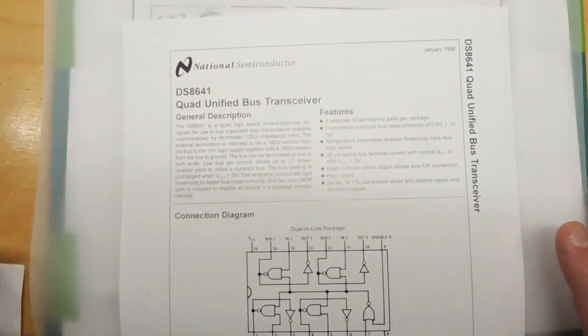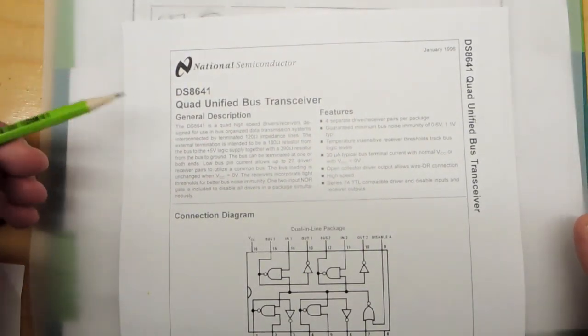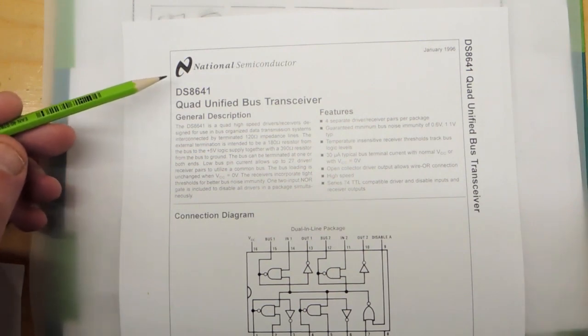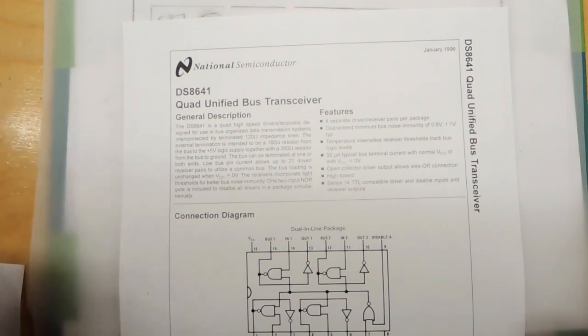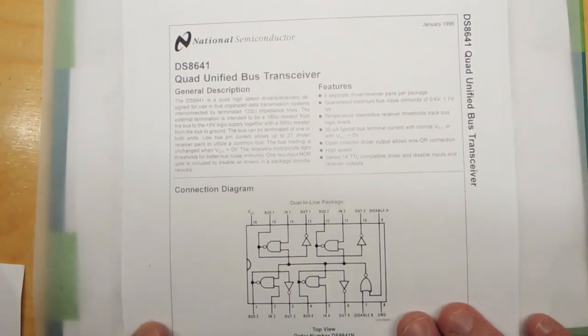Went back onto the internet started searching and then I realized this is probably a Unibus bus transceiver. For whatever reason National Semiconductor did a second source or maybe they're the primary source, who knows. The Motorola data sheets have vanished entirely on the web but the National one still exists.